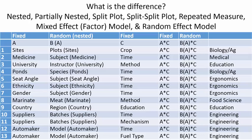There is no difference, or it doesn't matter how an experiment is called. That has nothing to do with how it should be analyzed. The analysis depends on how the factors are defined: is it a fixed factor, a random factor, or a nested factor? These three different types — fixed, random, and nested — define how the expected mean square is calculated for each factor, and that guides the F-statistic. So the p-value and F-statistic are guided by whether something is fixed, random, or nested — not by what we call our experiment.